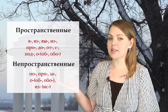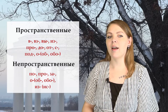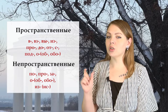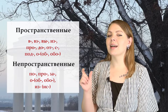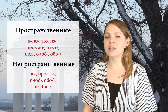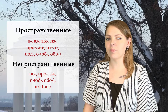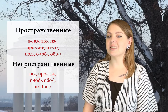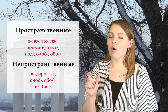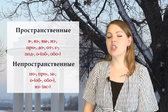Пространственные и непространственные. Глаголы с приставками пространственного значения означают движение, определённым образом направленное в пространстве. Глаголы с приставками непространственного значения — например, по, про, за, о, об, оба, из — показывают движение во времени.